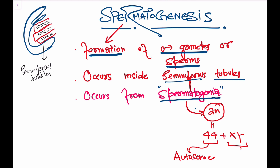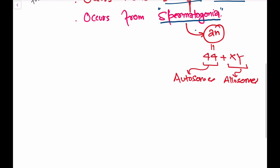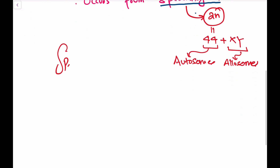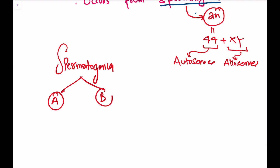The XY are allosomes or sex chromosomes. Spermatogonia are of two types: Type A and Type B. Type A spermatogonia are stem cells — they keep producing new spermatogonia, maintaining the pool, which is why males never have andropause. Type B spermatogonia are the ones that actually enter meiosis.